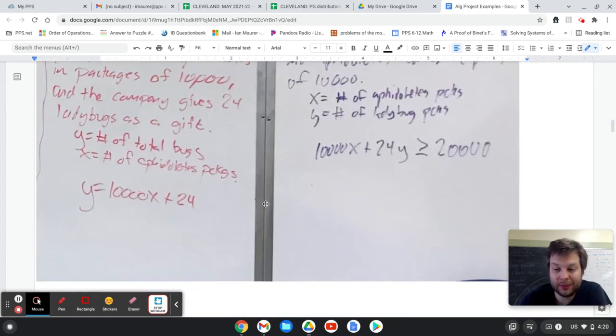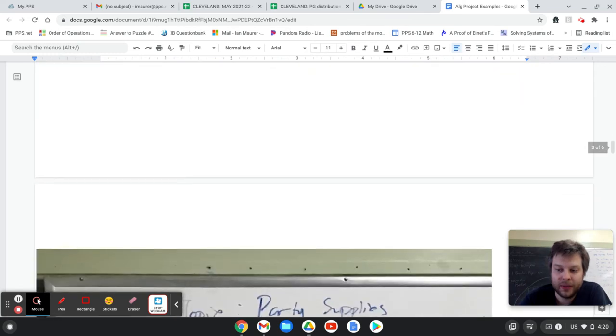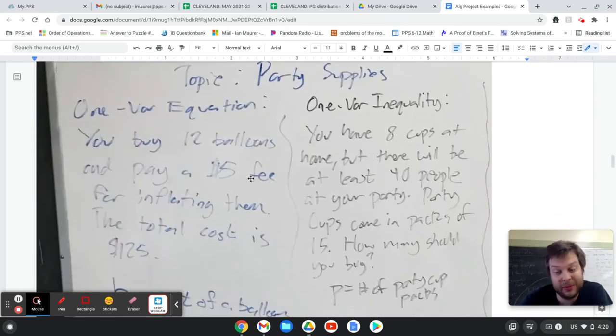So there's a few examples of word problems about bugs. In the next class, the topic was party supplies from like a party planning store. And so sort of similar style here.